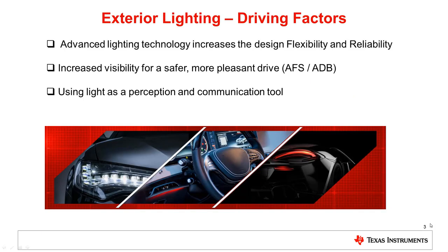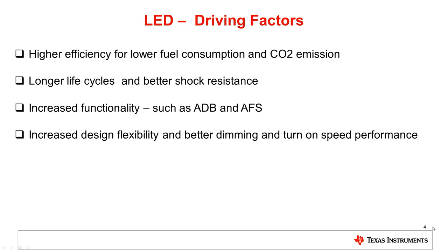In the area of automotive exterior lighting applications, the main driving factors are increased visibility for a safer, more pleasant drive, and using light as a perception and communication tool. The main driving factors for using an LED light source are higher efficiency for lower fuel consumption and CO2 emission, longer life cycles and better shock resistance, increased functionality such as ADB and AFS, and increased design flexibility with better dimming and turn-on speed performance.